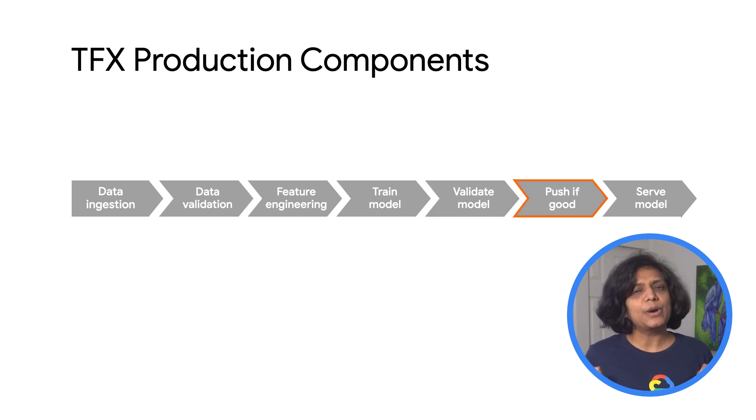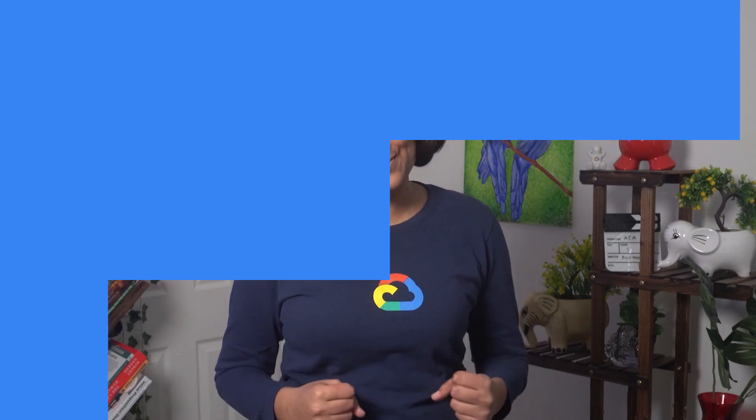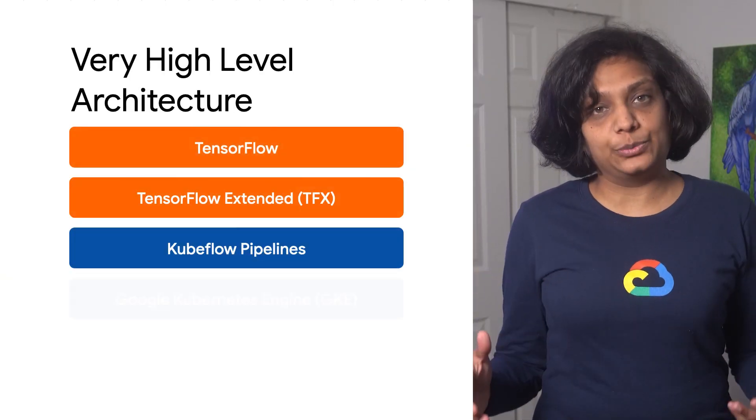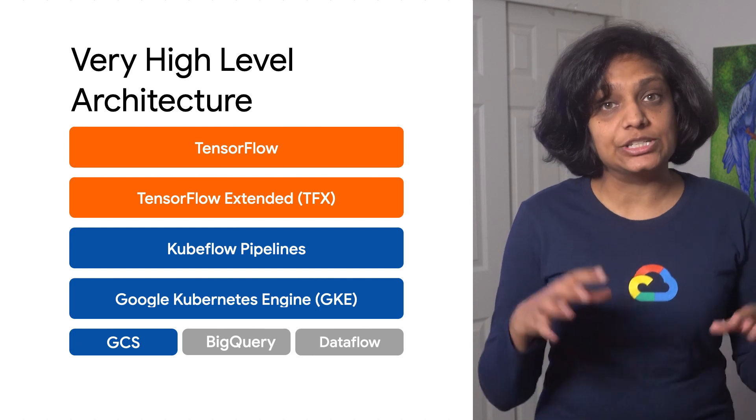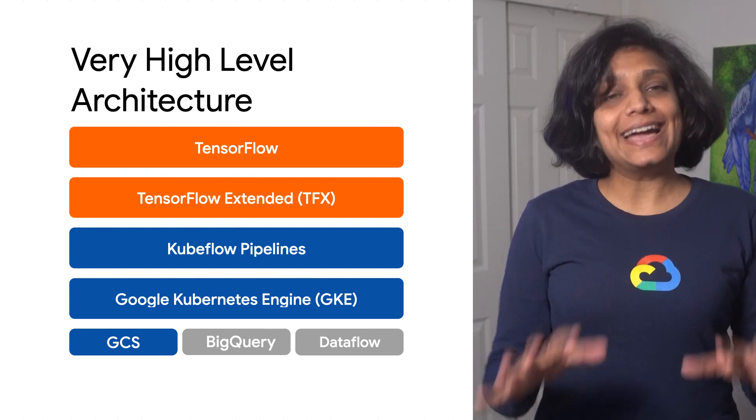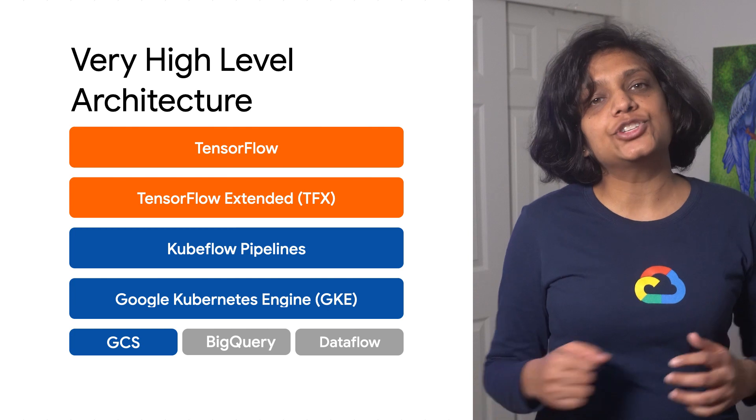This production environment needs to be powerful enough to support the rate of inference required by your application. Now, when does this ML workflow become a pipeline? It's when we automate it, and the automation is necessary, especially if we want to deploy these models in production. Here is a very high-level architecture of how it works: TensorFlow is running on TFX, which in turn is running inside Kubeflow Pipelines, and that's running on GKE, leveraging Google Cloud services.